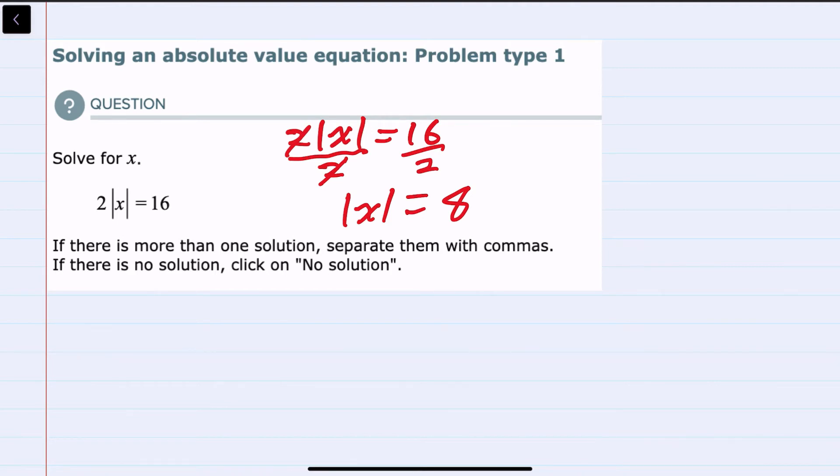If we had gotten to a step here where we had the absolute value of x equaled a negative 8, we could stop and say no solution, because an absolute value couldn't be negative. But since we have the absolute value equals a positive 8,